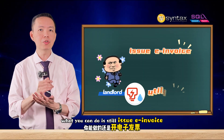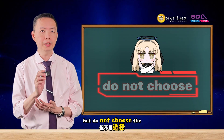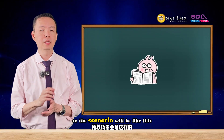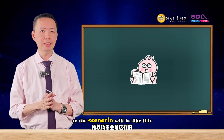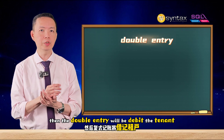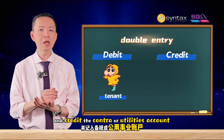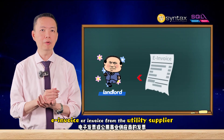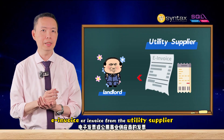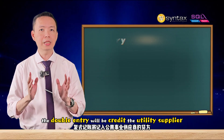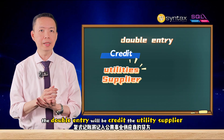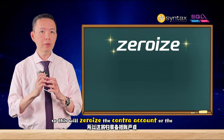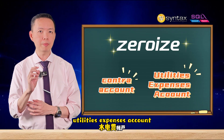But if they do not do so, what you can do is still issue an e-invoice for the utilities, but do not choose the income account — change it to an expenses or contract account. The scenario will be like this: you issue the e-invoice, then the double entry will be debit the tenant and credit the contract or utilities account. Then later, when you receive the e-invoice or invoice from the utility supplier, the double entry will be credit the utility supplier and debit the utilities or contract account. This will zero-rise the contract account or utilities expenses account, and this amount will not go into your income.